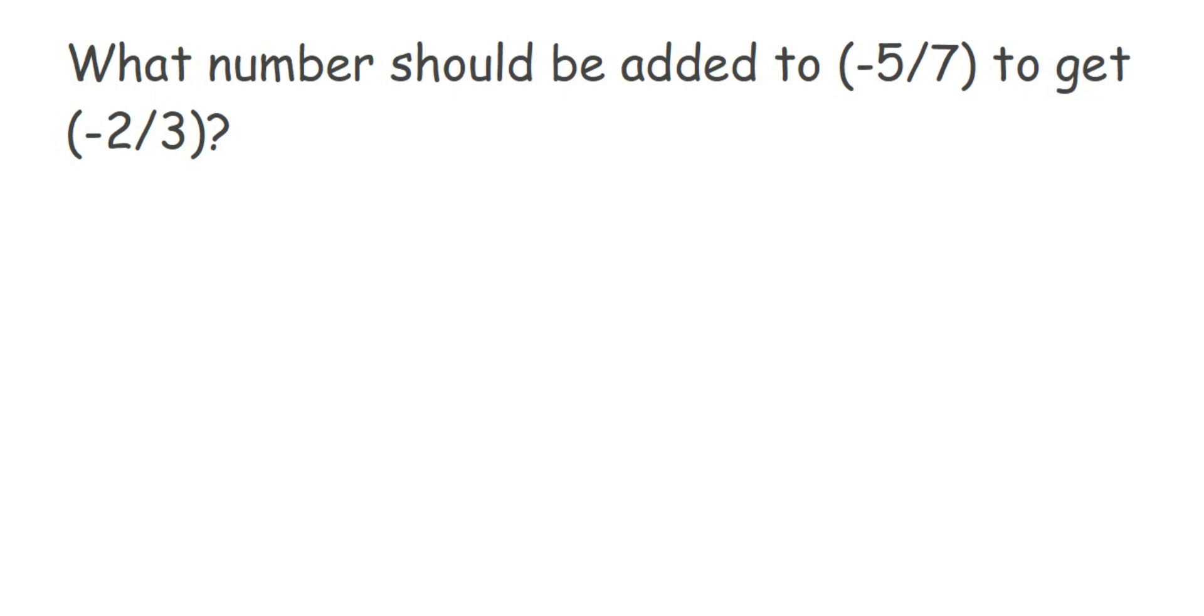Hello everyone, here's a question on rational numbers. What number should be added to -5/7 to get -2/3? So to this -5/7, what should we add to get the answer -2/3?